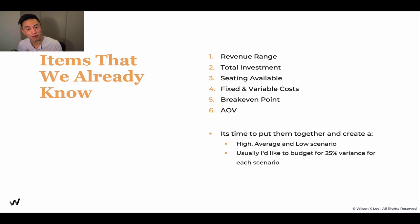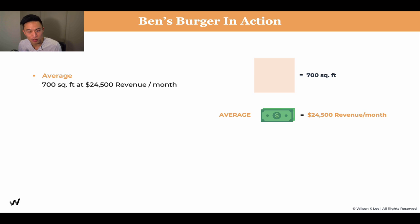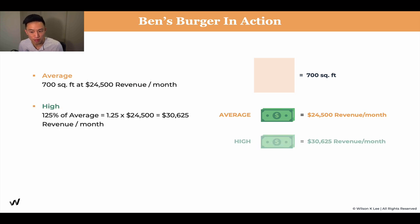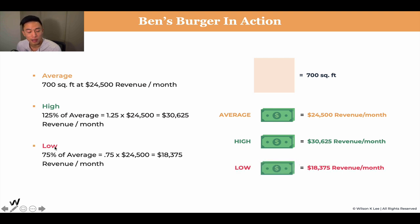I like to budget a 25% variance for each of these scenarios. For Ben's Burger, we've calculated that his 700-square-foot location would bring in $24,500 revenue per month on average. We take that and multiply it by 25% more — so we use 1.25 times the average number projected — which gives us $30,625 revenue per month on the high side.